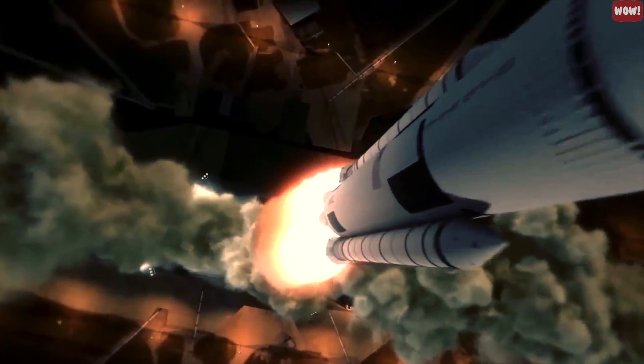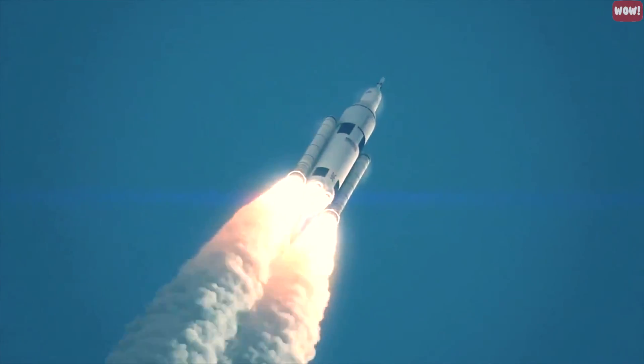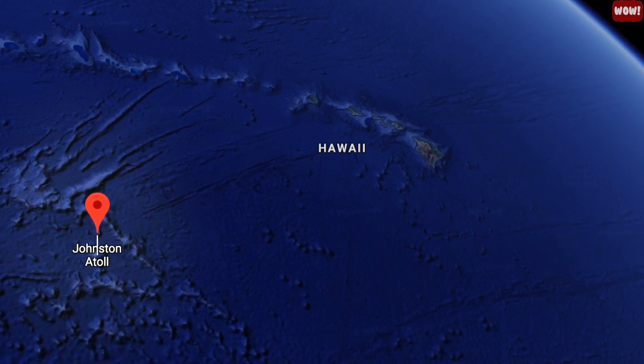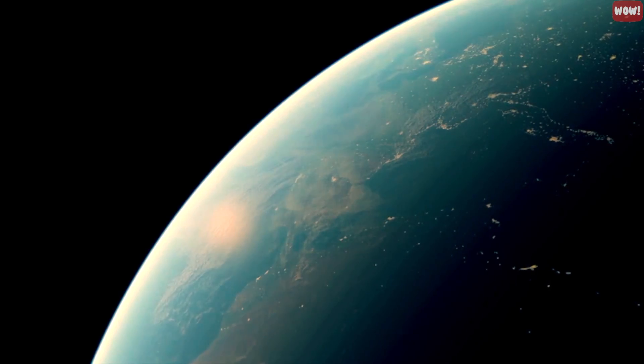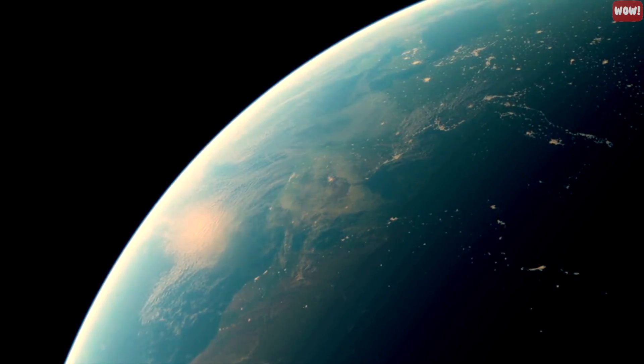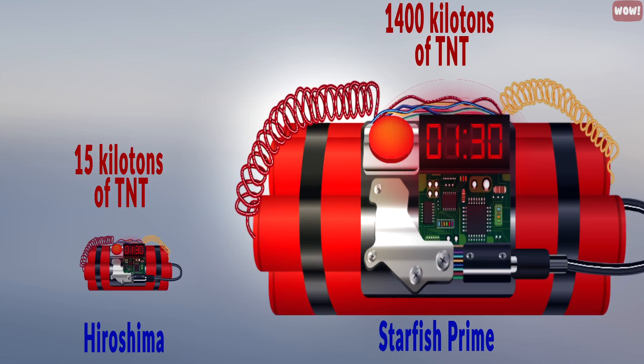In 1962, the United States conducted a high-altitude nuclear test named Starfish Prime at 250 miles altitude above the Johnston Island. This was the biggest nuclear bomb ever detonated in outer space, and 95 times more powerful than the Hiroshima nuclear bomb.